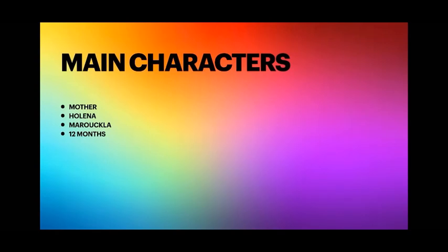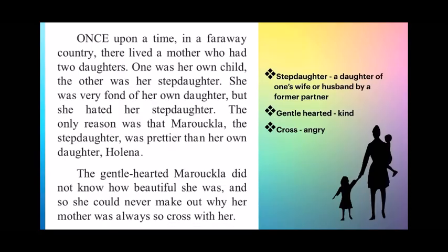In this story we see how sisters Marukkala and Holina, who both live in the same house, are different from each other. Once upon a time in a faraway country there lived a mother who had two daughters — one was her own child, the other was a stepdaughter. She was very fond of her own daughter but hated her stepdaughter, because Marukkala was prettier than Holina. The gentle-hearted Marukkala did not know how beautiful she was and could never make out why her mother was always so cross with her.